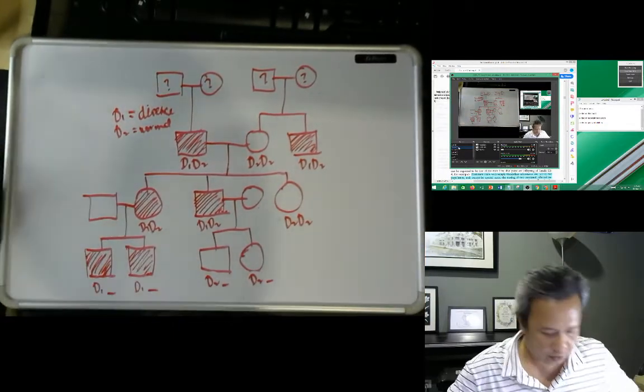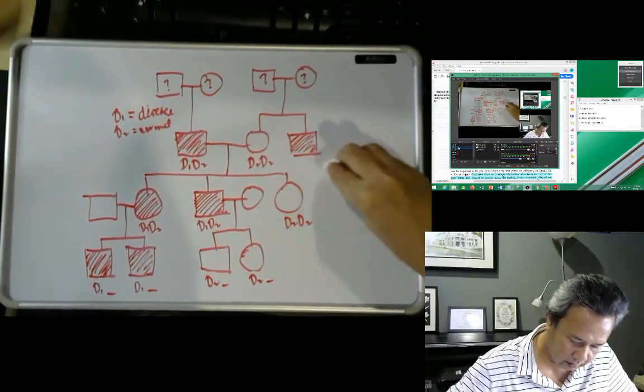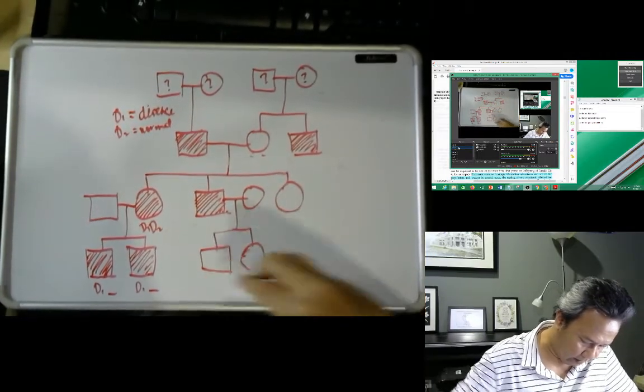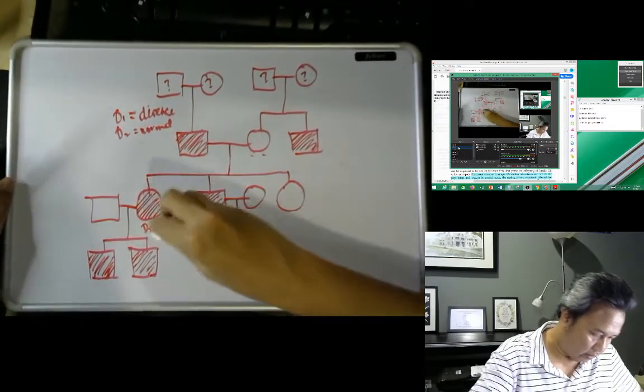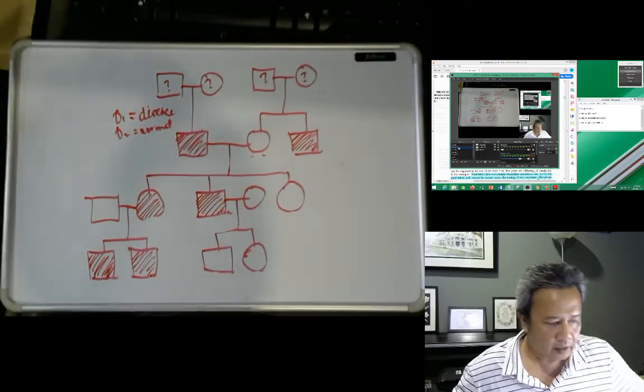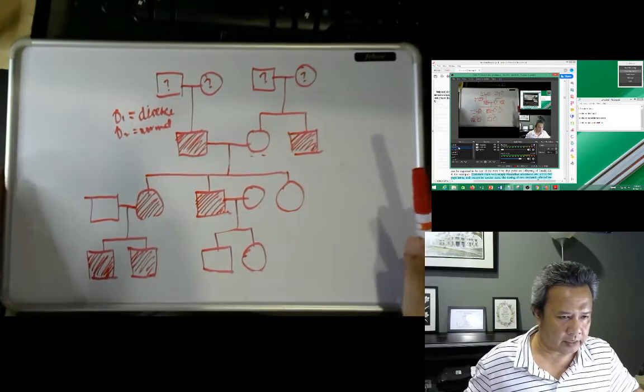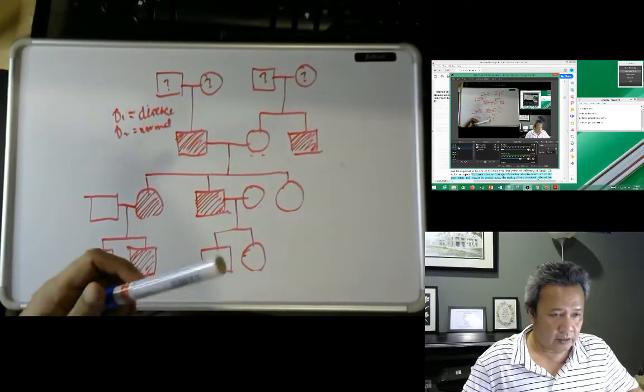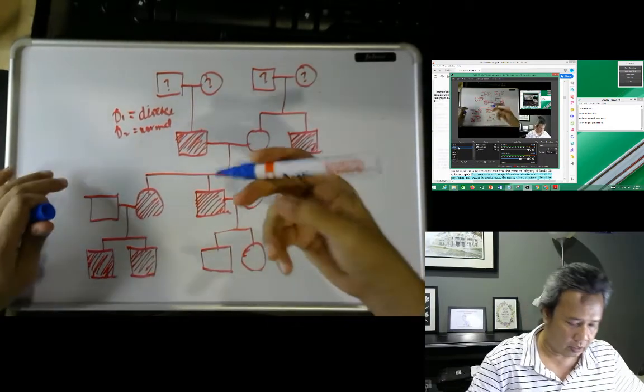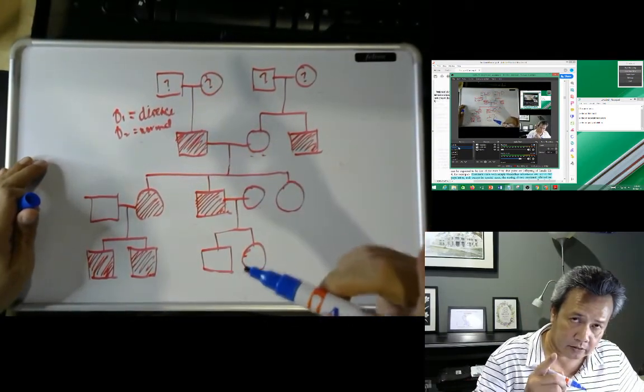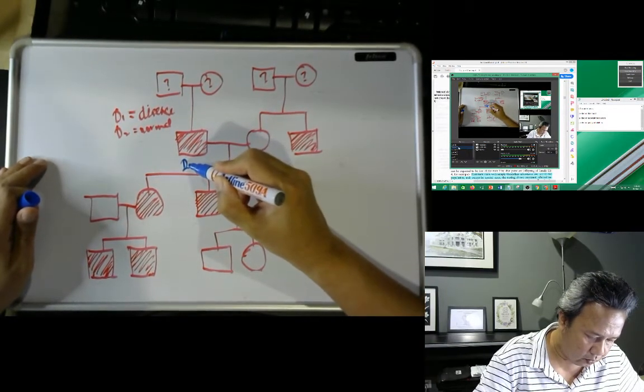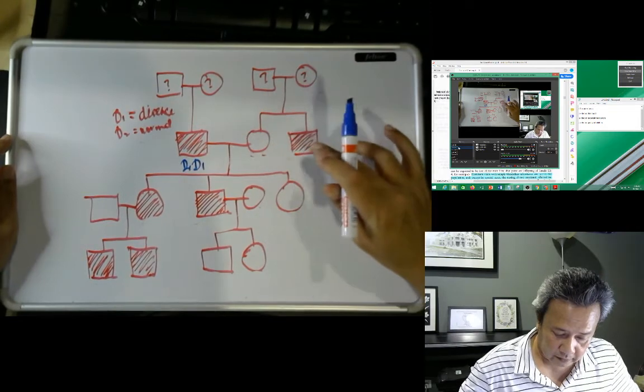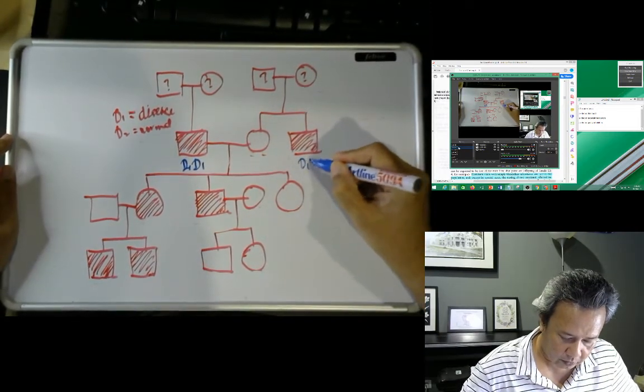From here you may conclude. Now what I want to show you is, okay, let's just remove this. Now I've removed that. Can we assume that this family runs on autosomal recessive? Now let's say D1 disease, D2 normal. Because it's recessive, this one must be D1 D1 correct.